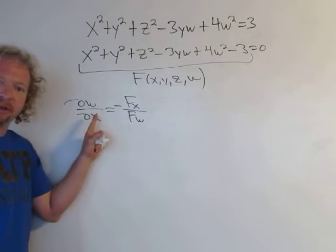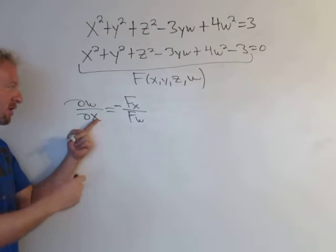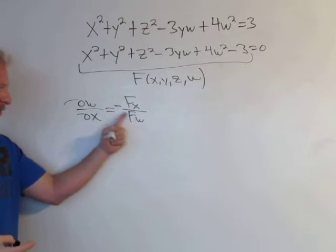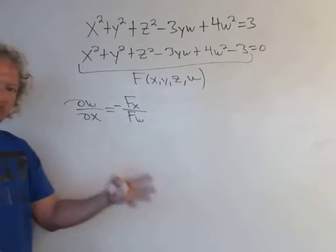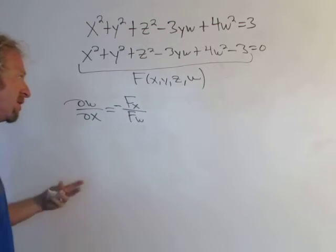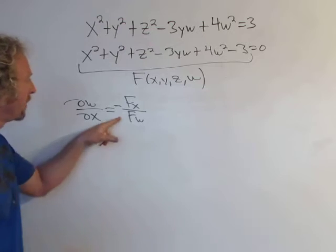A really easy trick is just crisscrossing — x and w crisscross with each other — that seems to work pretty well as a memory trick.